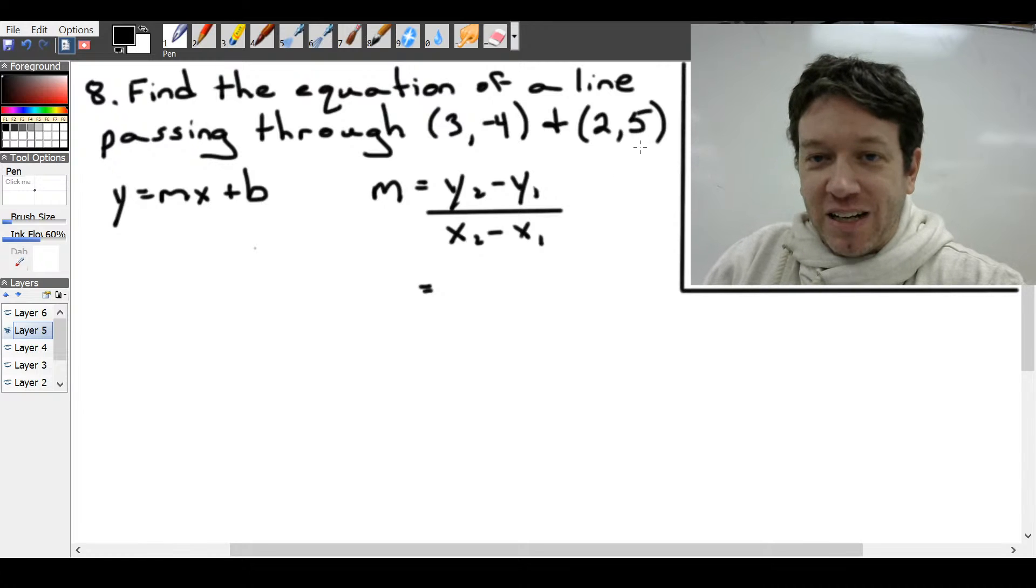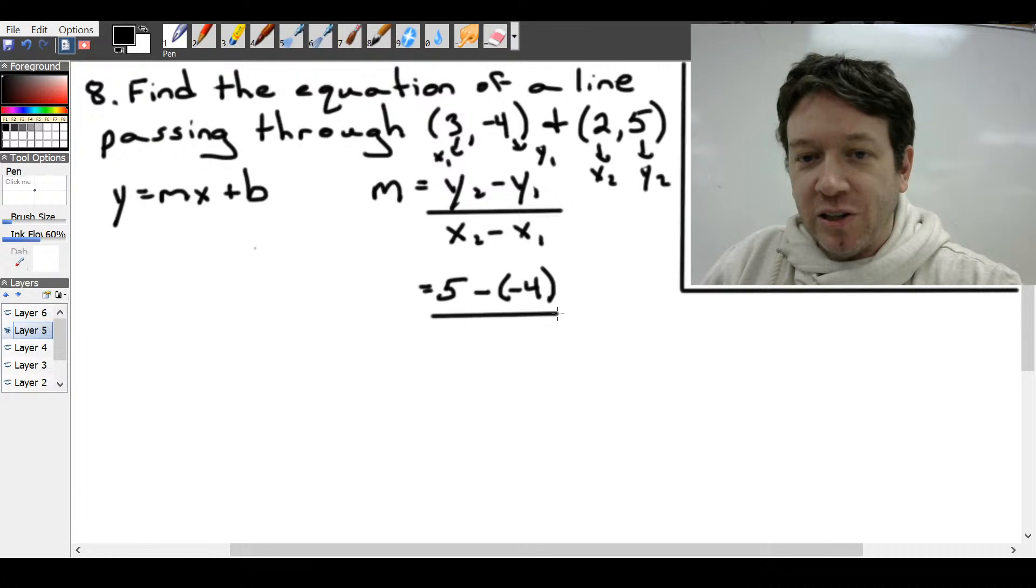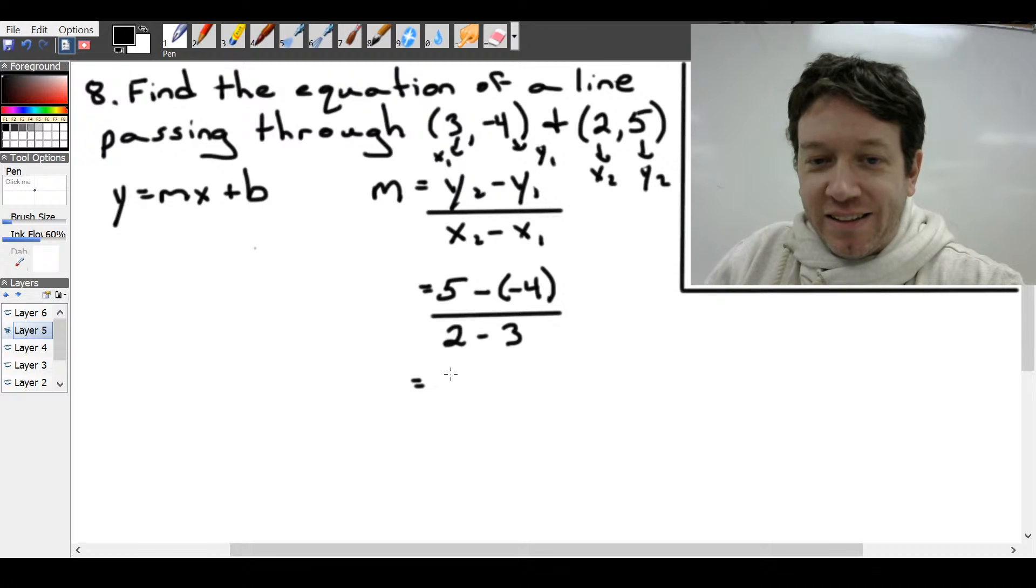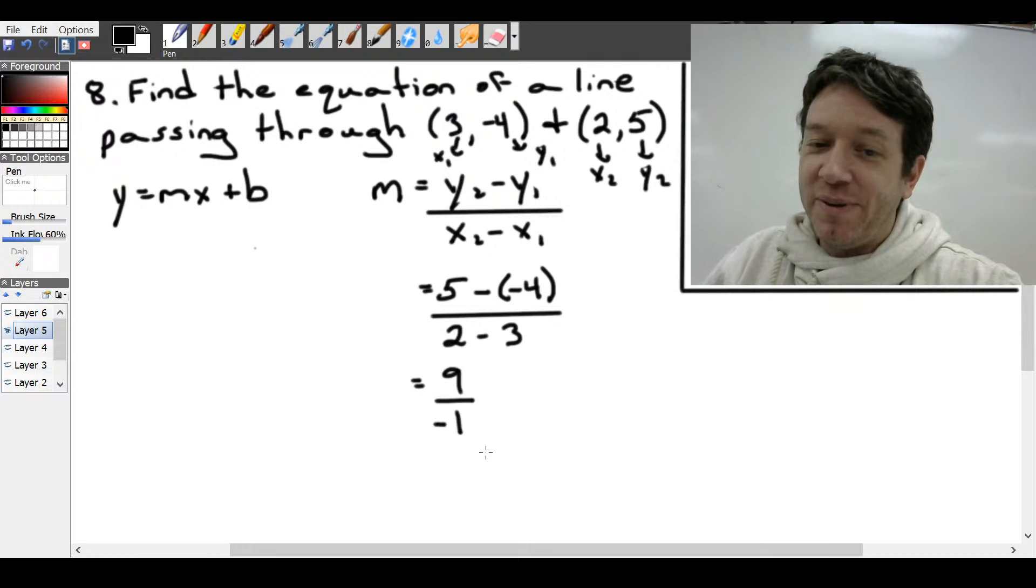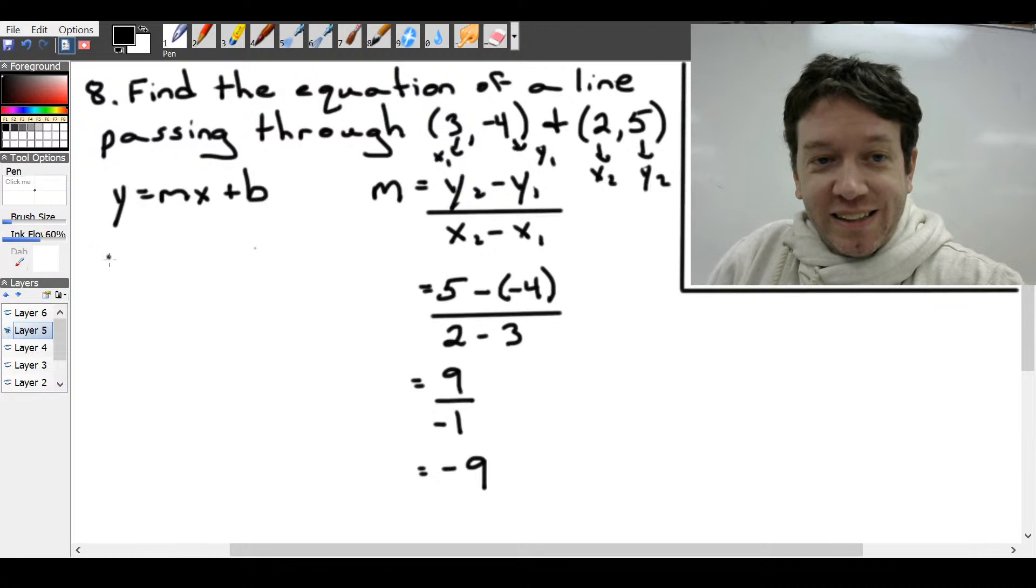Now, it doesn't really matter which one you label. I'll label this as y2 and this one as y1. And therefore, this will have to be x2 and this will be x1. So if I just plug these numbers in, we're going to get 5 minus negative 4. So we got a double negative there, all over 2 minus 3. So this gives us 9 in the numerator and negative 1 in the denominator, which reduces to negative 9. So there's our slope.